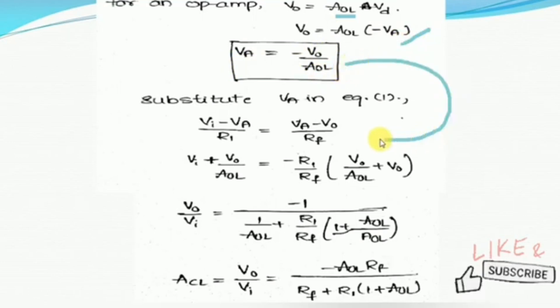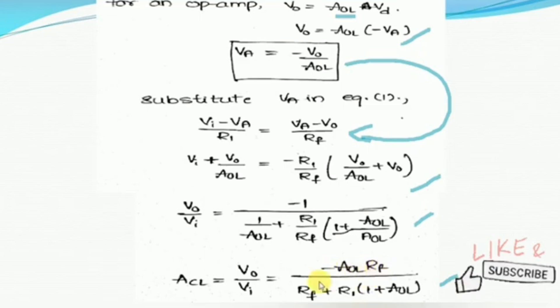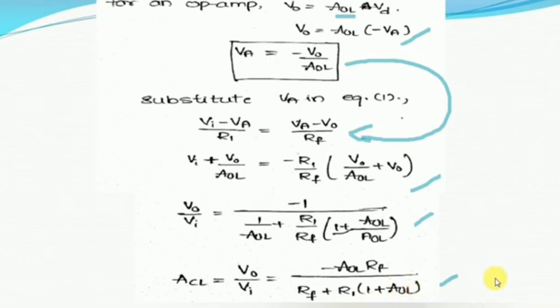Substituting the Va value into the equation and performing the mathematical simplification, we can derive the closed-loop gain of the inverting amplifier using the practical op-amp as: minus AOL times RF, divided by (RF plus R1) times (1 plus AOL). This is how we derive the closed-loop gain of the inverting amplifier circuit using a practical op-amp.